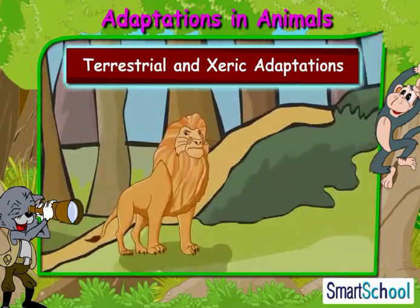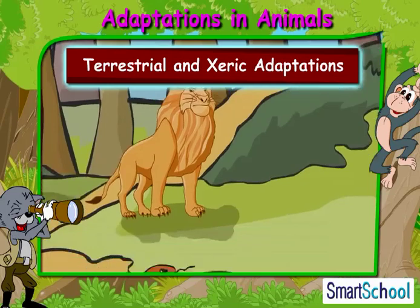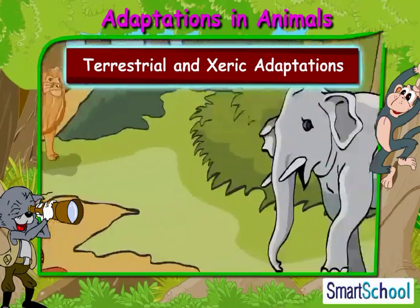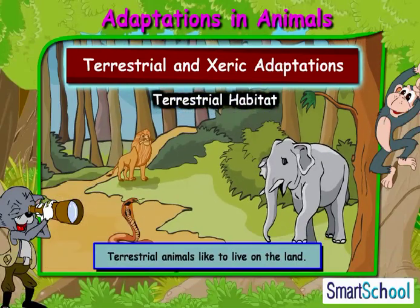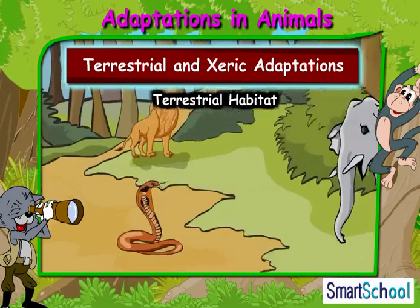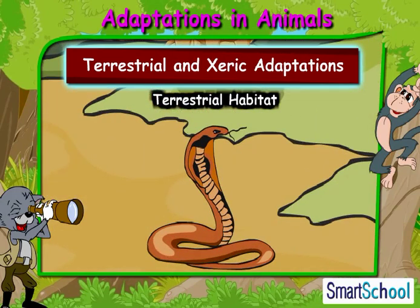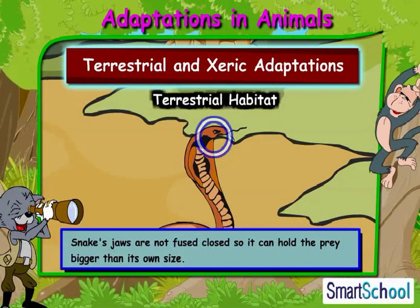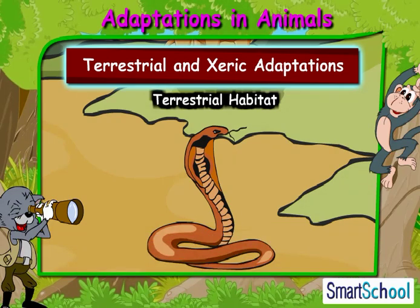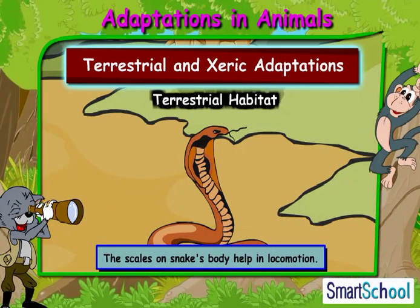Animals like Lion, Snake, and Elephant are terrestrial animals because they live on land. Snakes show adaptation to their environment in various ways. Their jaws are not closely fused so that they can hold prey bigger than their own size. The scales on their body assist them in locomotion.